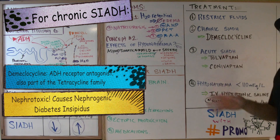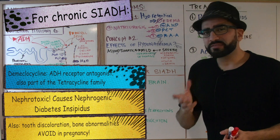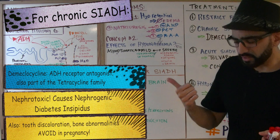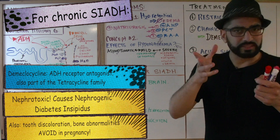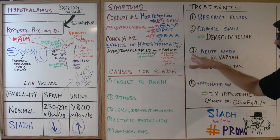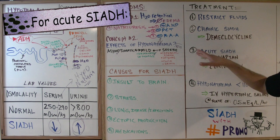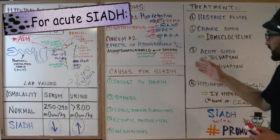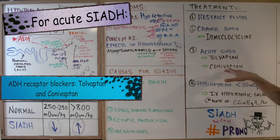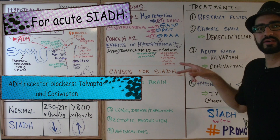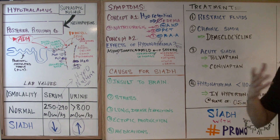Demeclocycline belongs to the tetracycline antibiotic family, so watch for side effects including tooth discoloration and bone abnormalities — and remember to avoid it in pregnancy. For acute SIADH — more of an emergency situation — you can use ADH receptor blockers: tolvaptan and conivaptan. Add those two medications to your list.